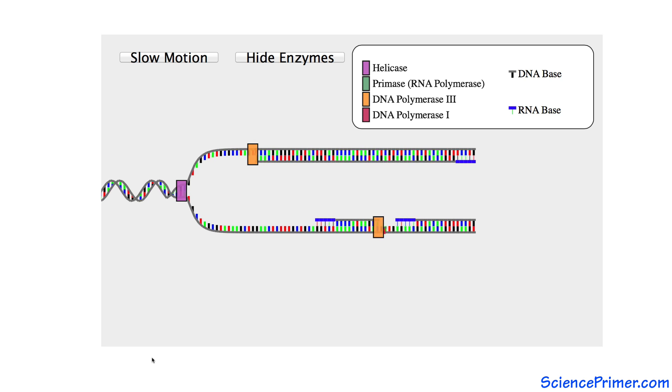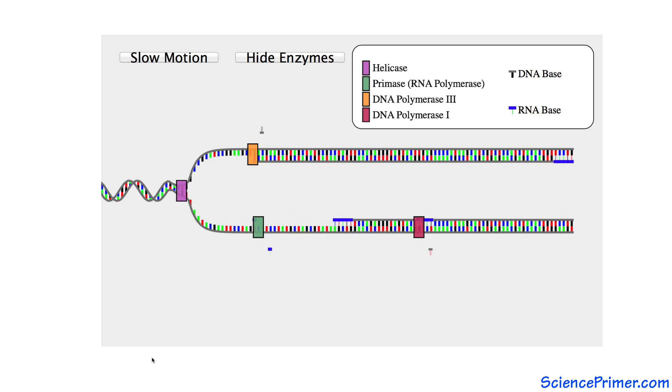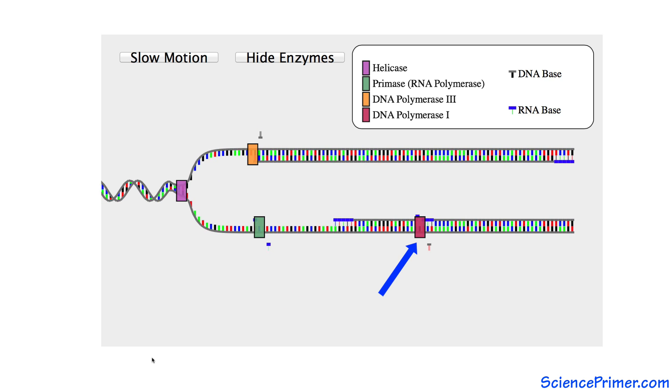When an Okazaki fragment extends to the point that it overlaps with the previous RNA primer, RNA nucleotides are removed and replaced by DNA. This requires DNA polymerase I's exonuclease activity.